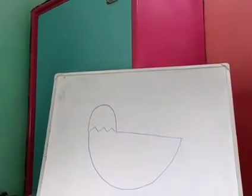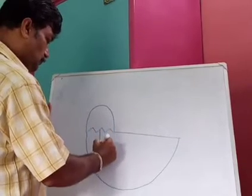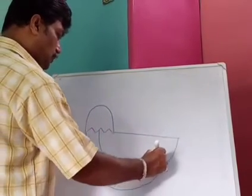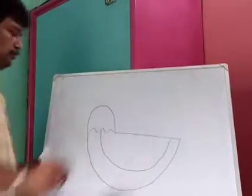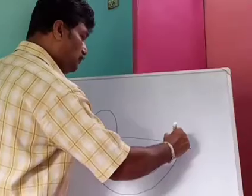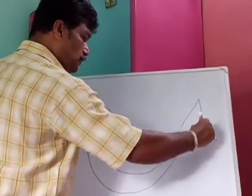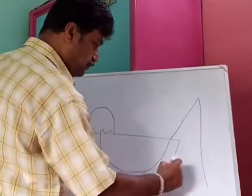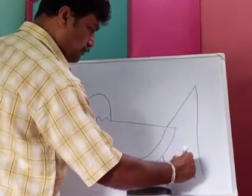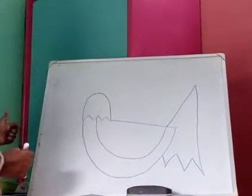Down, join. Good student. Down, join. Good student. This line is up. This line is down. Down, up, down, up, down. Okay.